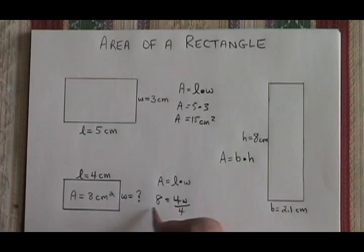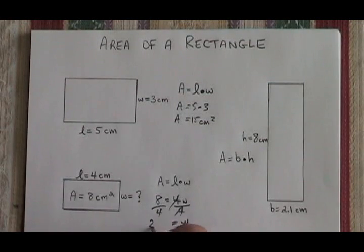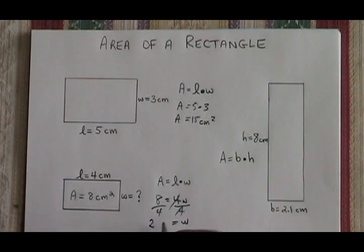If we divide both sides by 4, our W is isolated, and our width is equal to 2. Since the area is in centimeters squared, the unit of distance in this problem is the centimeter.